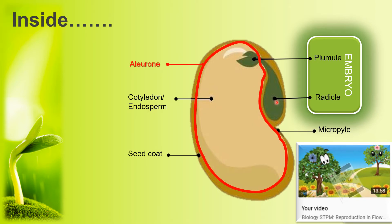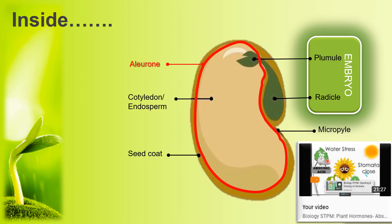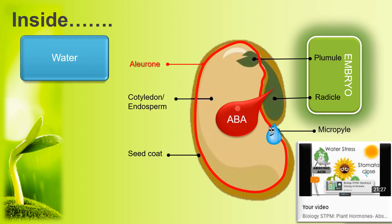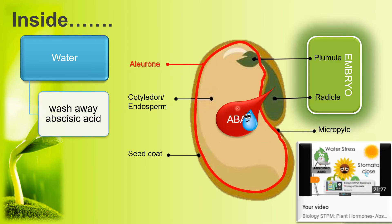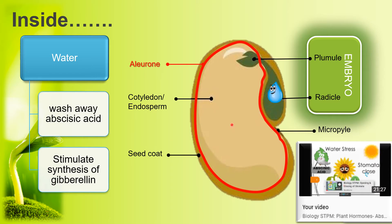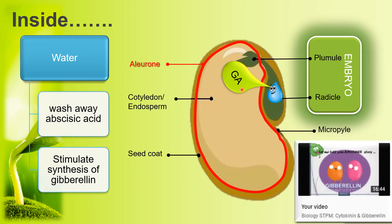In my video on plant hormones, I introduced the role of abscisic acid (ABA), a hormone synthesized by the seed embryo to promote seed dormancy — that is, to prevent the seed from germinating. When water diffuses into the seed, it dilutes and washes away the abscisic acid. Then, water will stimulate the embryo to synthesize a new hormone — gibberellin (GA), or gibberellic acid — which promotes seed germination.